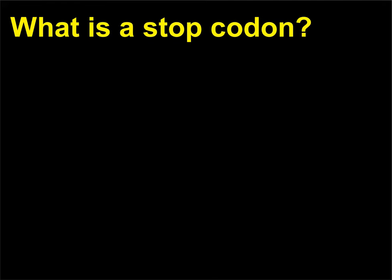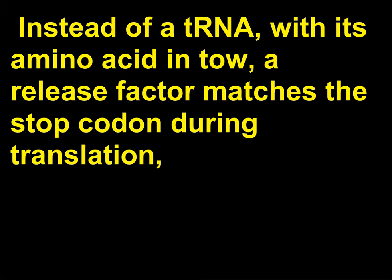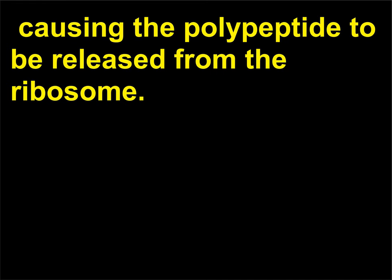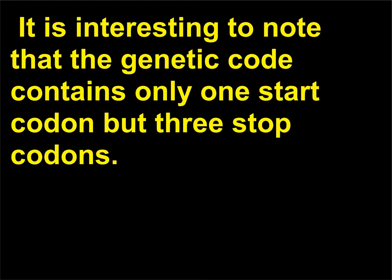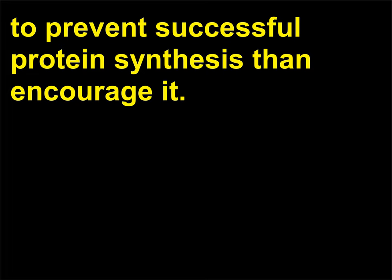What is a stop codon? A stop codon signals the end of coding. Instead of a tRNA with its amino acid in tow, a release factor matches the stop codon during translation, causing the polypeptide to be released from the ribosome. It is interesting to note that the genetic code contains only one start codon but three stop codons. This means that a random DNA mutation is much more likely to prevent successful protein synthesis than encourage it.